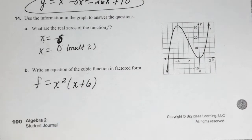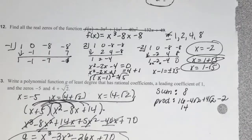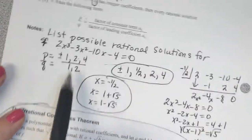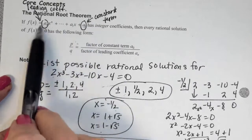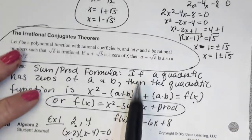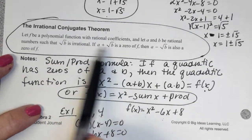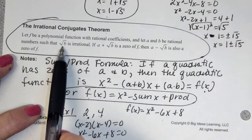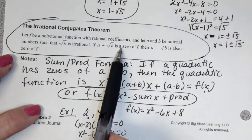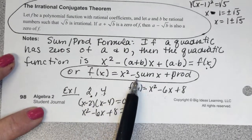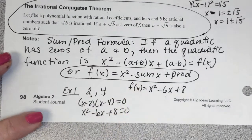The big things to know: knowing the possible rational roots using the p/q method, the synthetic division technique, knowing that irrational solutions must come in conjugate pairs, and the sum and product formula for building quadratics from zeros. That last formula is very helpful.